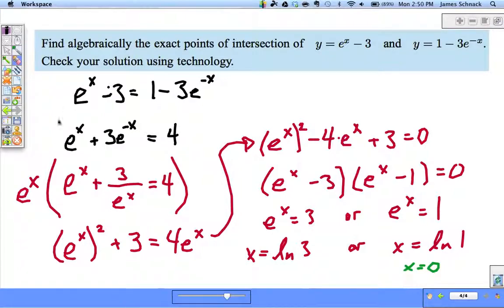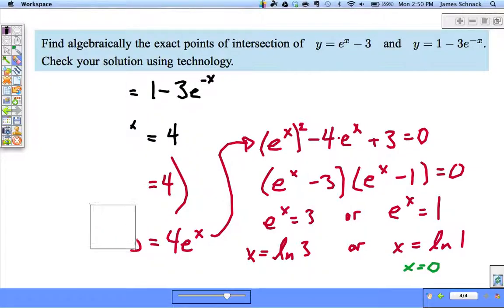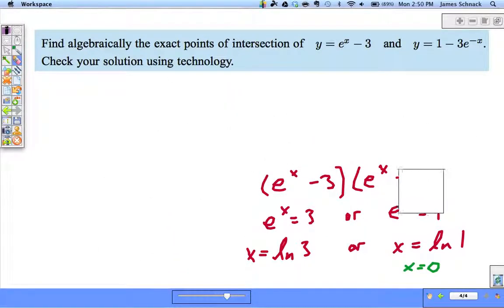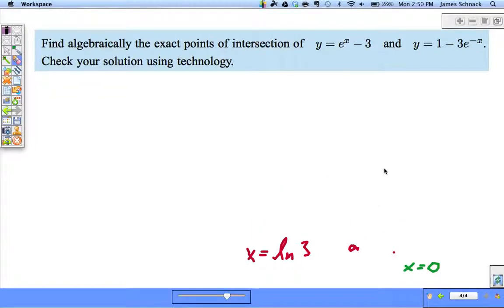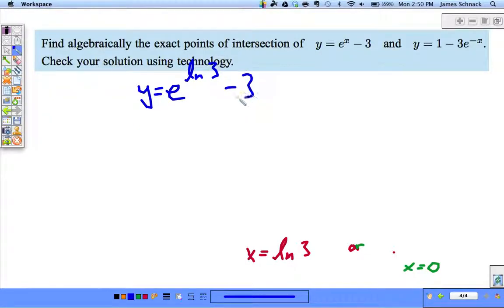We need the y-coordinates now. How do we find them? Plug back into the original equation. I'll use this one: y = e^(ln 3) - 3. What happens with e^(ln 3)? When the base and log have the same base, they cancel, leaving 3 - 3 = 0. So one intersection point is (ln 3, 0).